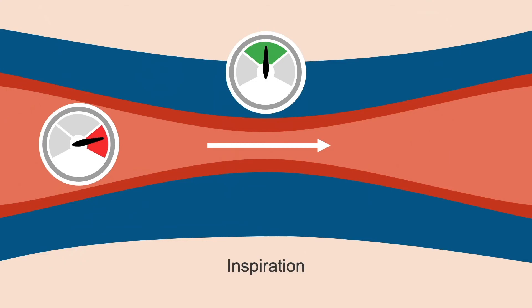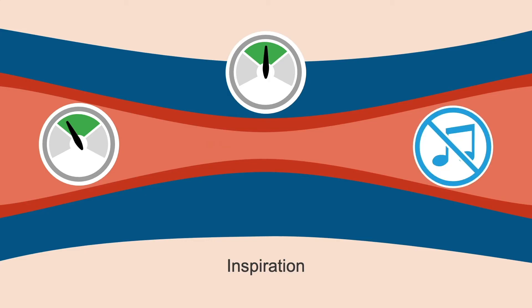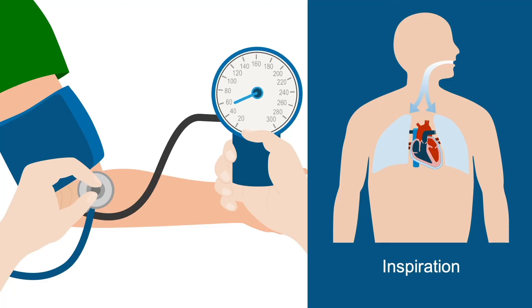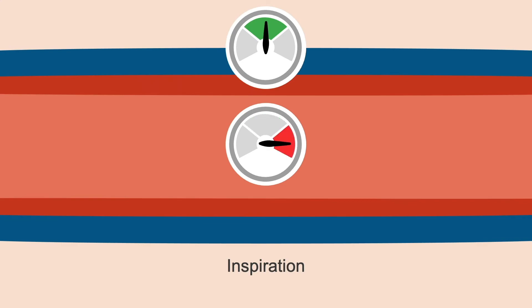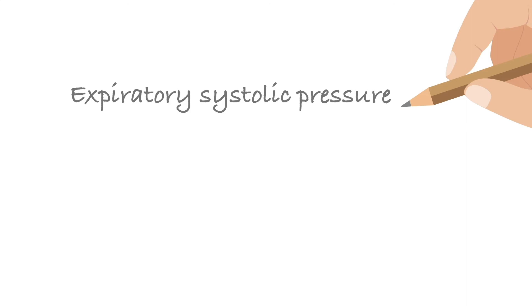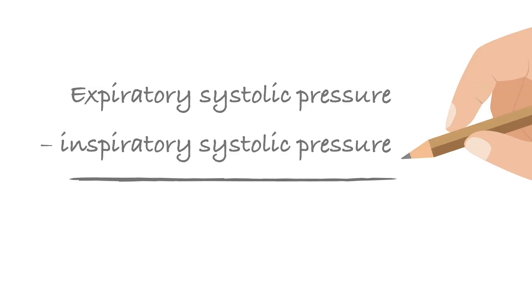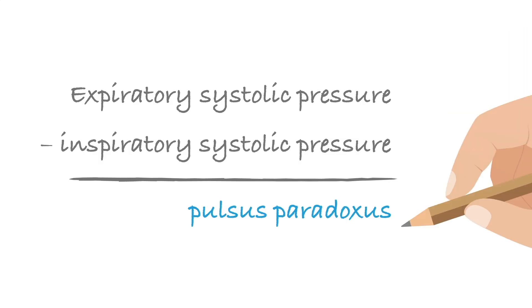During inspiration, the arterial pressure drops below the cuff pressure again, stopping the blood rushing in and resulting in no sound. When you hear a sound with every heartbeat, that means you've reached the point where the arterial pressure during inspiration also exceeds the cuff pressure. Note the expiratory systolic pressure — when you heard the first sound — and then note the inspiratory systolic pressure — when you started hearing a sound with every beat. The difference is your pulsus paradoxus measurement.